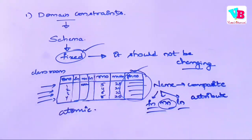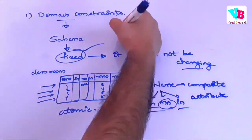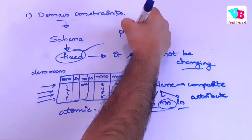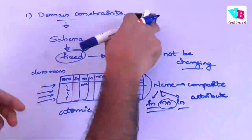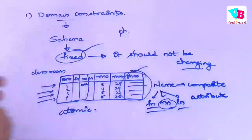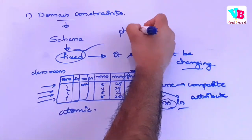Because, phone number is not directly atomic. So, let's take phone number. So, phone number and attribute.